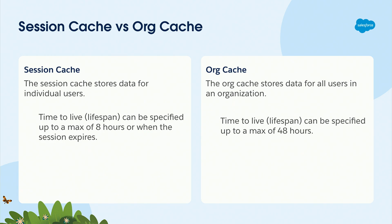For our use case, users are out in the field doing things like home health assessments and safety inspection forms. That type of data is accessible for a broad set of users — it's not for a specific user. They may be on a different site or capturing different data, but the form itself isn't changing. So that was a perfect example for us to utilize the org cache.